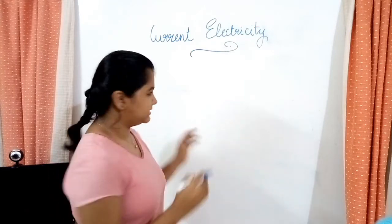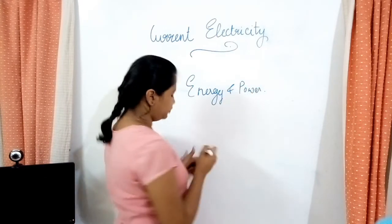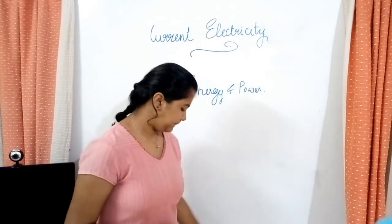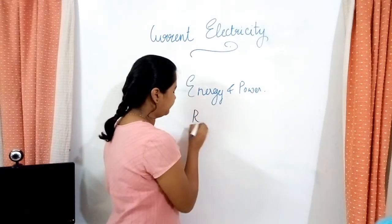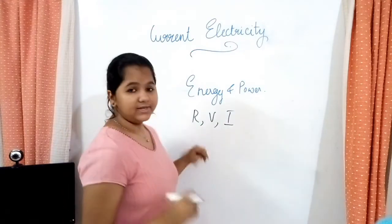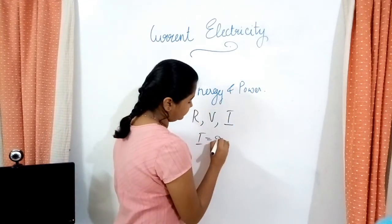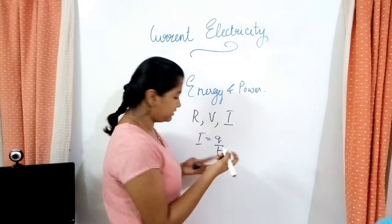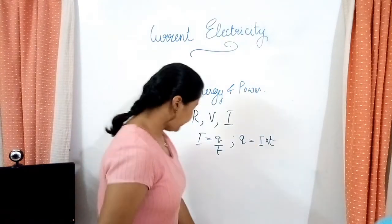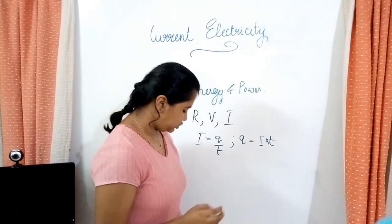The first thing you have to learn is about energy and power. We need energy to do work, we need energy to study. Let's see what energy is in terms of physics. Take a conductor of resistance R, potential V, and current I. We know the total charge flowing through a conductor: I is equal to Q divided by T, so Q is equal to I into T. From the equation for potential, we know potential is the work done to move a charge from low potential to high potential.